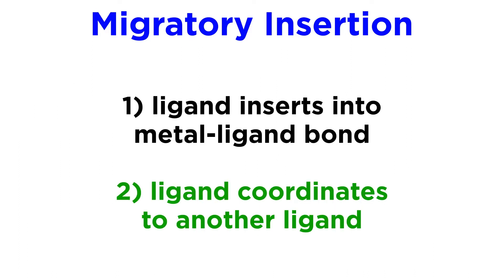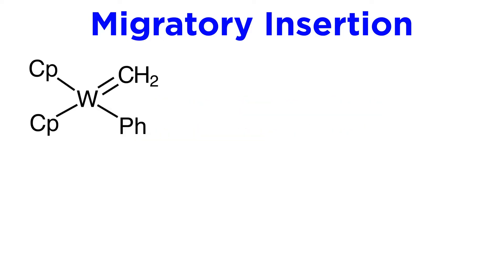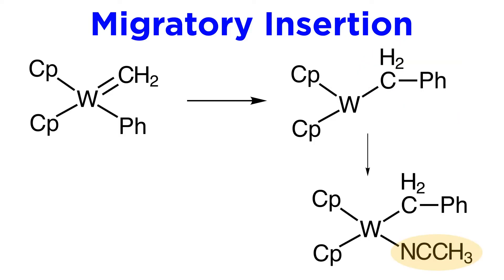Let's also learn a slightly different type of migration where a ligand coordinates to another ligand rather than inserting into the metal-ligand bond. Here is a tungsten complex with two CP ligands, a phenyl and a carbene. The phenyl can migrate to the other side of this carbon atom, such that we end up with a sigma bond from the metal to the CH2, and then a sigma bond to the phenyl, so this is now essentially a benzyl ligand. Then this nitrile could coordinate, making the migration irreversible.